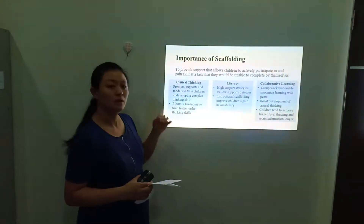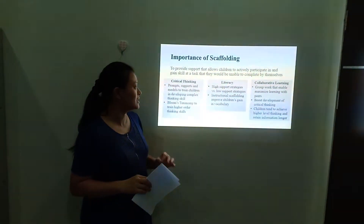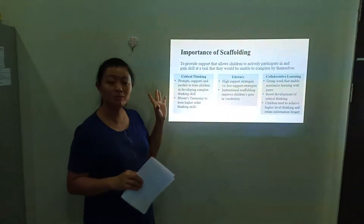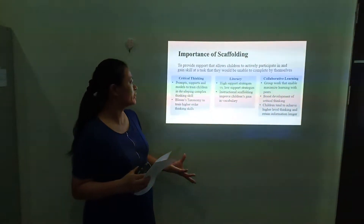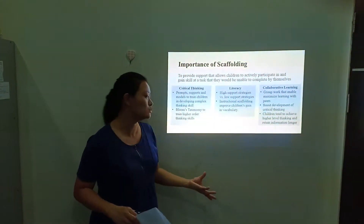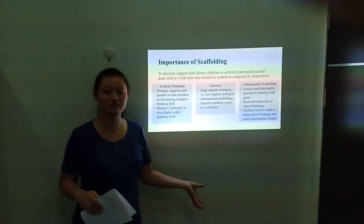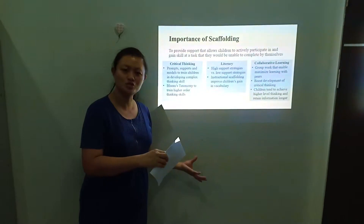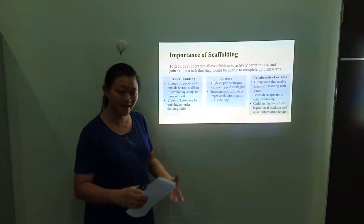Now let's look at the importance of scaffolding. Scaffolding provides support that allows children to actively participate in and gain skills at a task they would be unable to complete by themselves. In terms of critical thinking, we can use prompt support and modeling to train children in developing complex thinking skills, and Bloom's Taxonomy can be used to train higher-order thinking skills. For literacy, we can use high-support strategies versus low-support strategies, aiming to move children toward more low-support strategies as they gain knowledge. For instructional scaffolding, it helps improve children's gains in vocabulary.